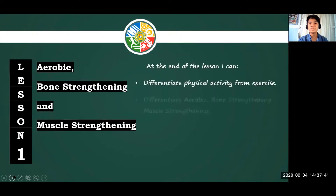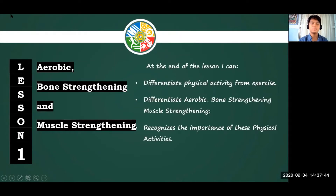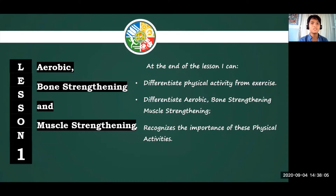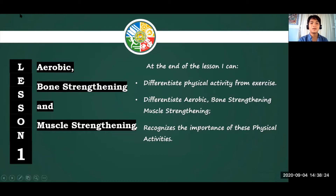On the right side of our screen is our guide or our objectives. It is a guide for us to know what we are expected to do or to learn during or after this discussion. The first objective is to differentiate physical activity from exercise — both terms are vital in our subject. The second is to differentiate aerobic, bone strengthening, and muscle strengthening. And the last one is to recognize the importance of physical activity so we know the essence of why we are learning this topic.